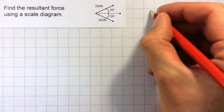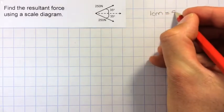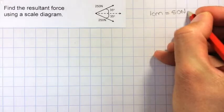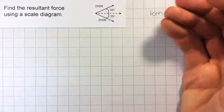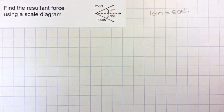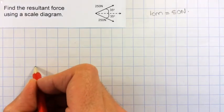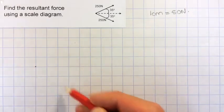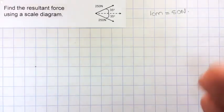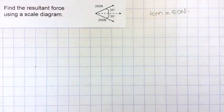I'm going to use 1 cm equals 50 N, which will mean each of these is 5 cm long, which is a nice size. One thing that is important is to choose a starting point so you've got space to go both up and down.